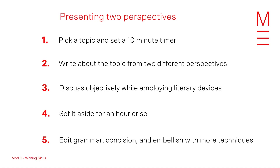If you're time poor and lack the time to write a full discursive piece, practice short exercises. Rather than writing a full piece or scaffold, do something different and get comfortable providing different perspectives. Pick a topic, set a 10 minute timer and write about the topic from two different perspectives — discussing each perspective objectively while employing literary and rhetorical devices. Once you're finished, set it aside for an hour or so, come back and read over it, correct for grammar and spelling, and consider where you can embellish it with more techniques to enhance style or voice.